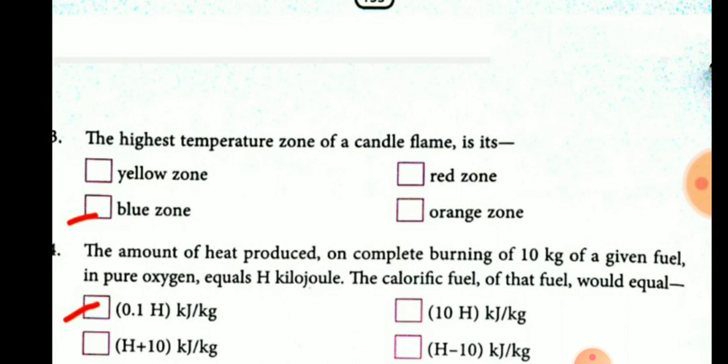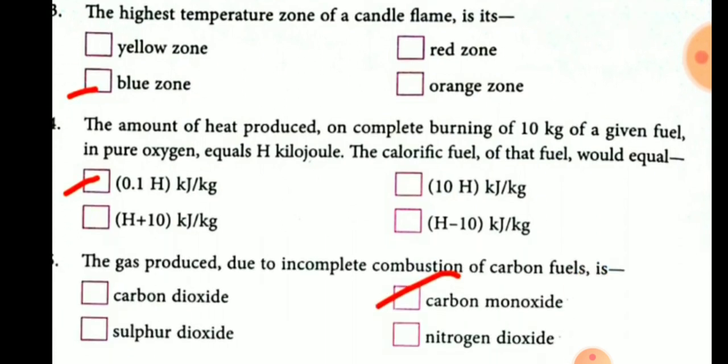The amount of heat produced on complete burning of 10 kg of a given fuel in pure oxygen equals H kJ. The formula is: calorific value equals heat produced divided by mass. So the calorific value will be H divided by 10, which equals 0.1 H kJ per kg.